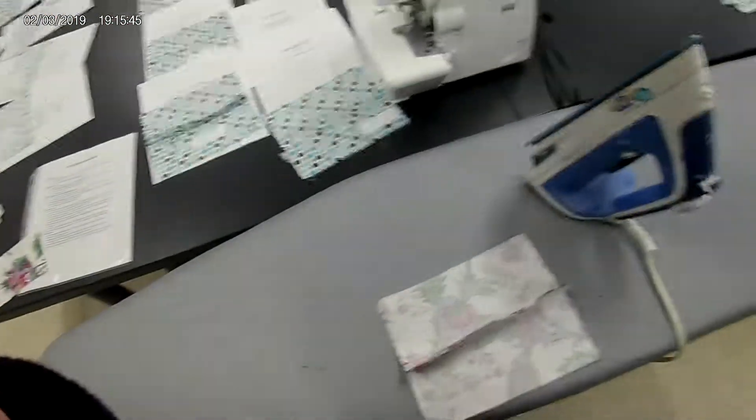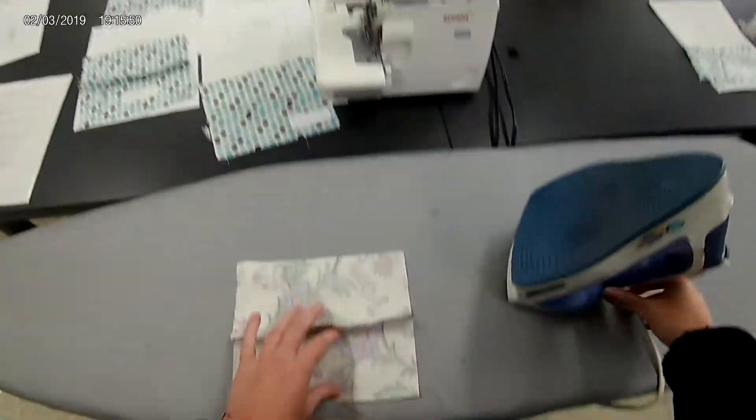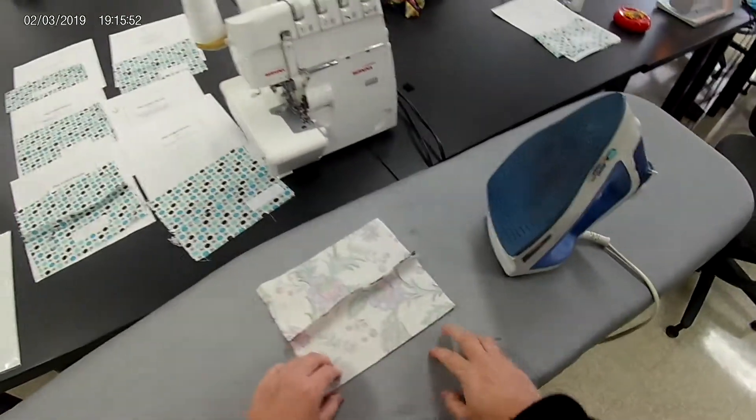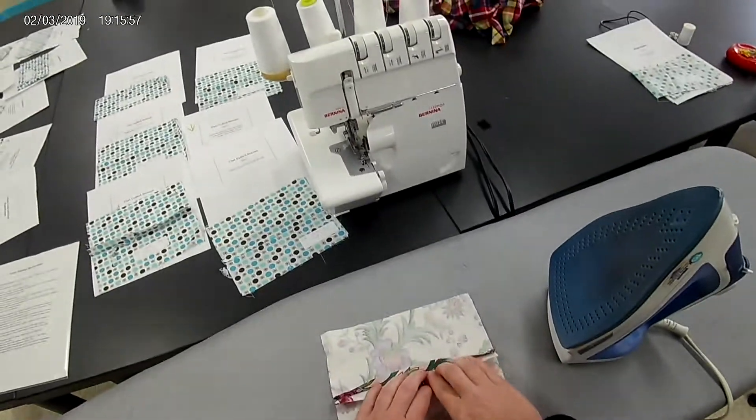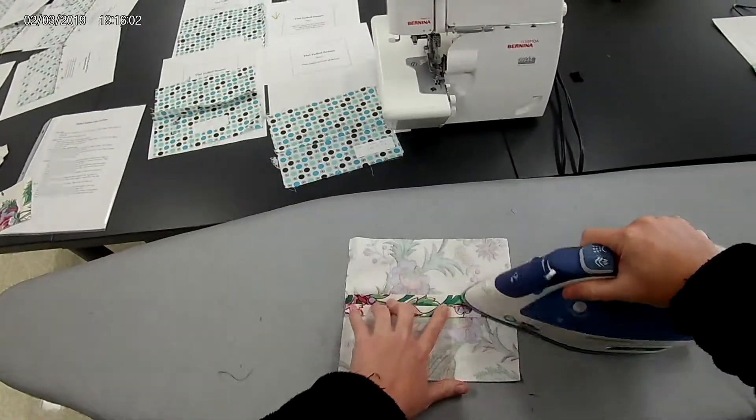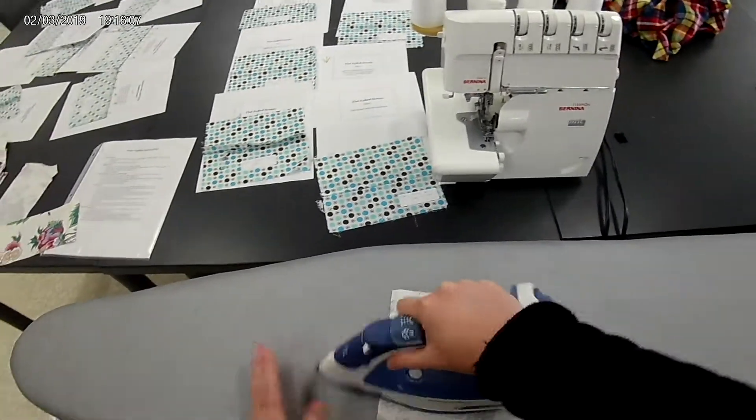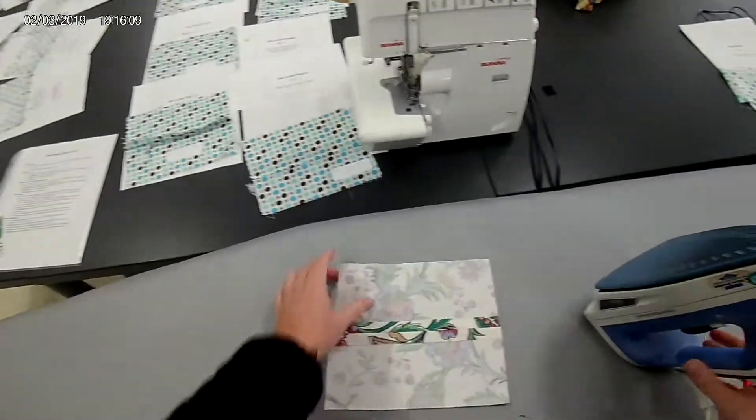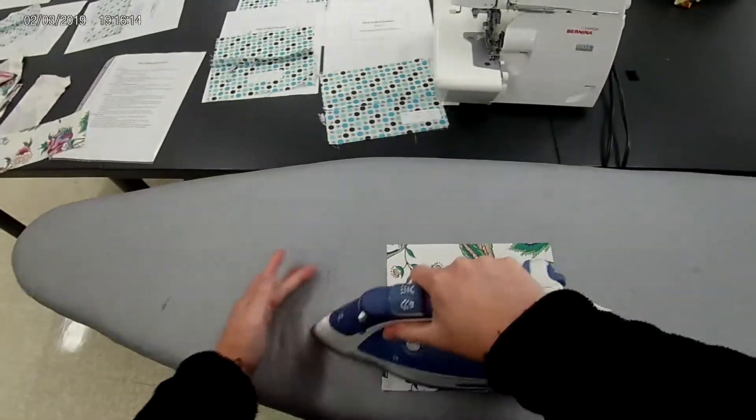Next, I am going to take it to the ironing board. Wake up my iron, as they are all auto shutoffs. Finger press open the seam. Then, direct the point of the iron down the seam line, pressing the seam open. Always flip your sample over and give it another press on the other side.